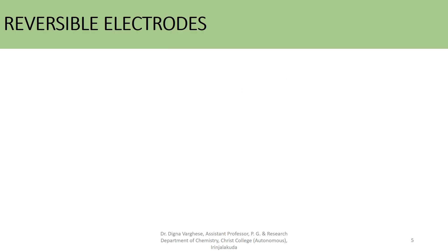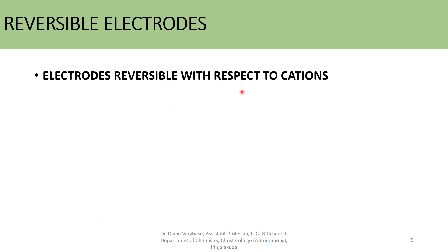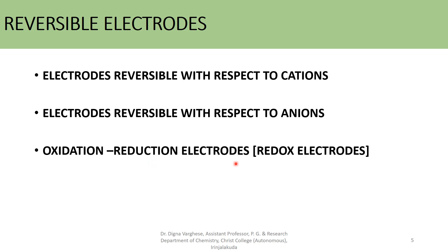Reversible electrodes: the two electrodes constituting a reversible cell must themselves be reversible. For example, the Daniel cell. Reversible electrodes are of three types: first, electrodes reversible with respect to cations, that is metal–metal ion electrodes; second, electrodes reversible with respect to anions, that is metal–insoluble metal salt electrodes; and third, oxidation-reduction electrodes or redox electrodes.